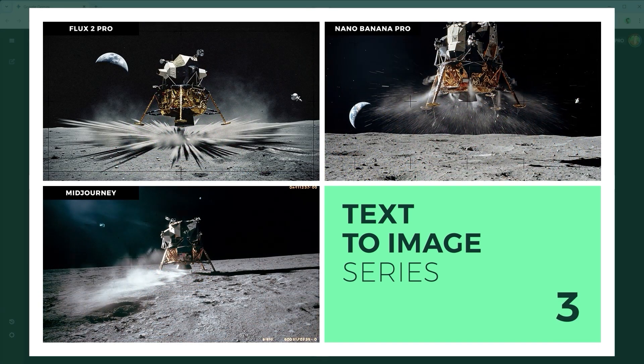Example 3 is the Vintage Rover Ride Challenge, which checks whether the scene looks as if it were captured in 1969. The model must emulate aged photographic tones, sun-bleached contrast and period-accurate shadows based on the original NASA Lunar Rover footage. The winning criterion: authentic visual accuracy.